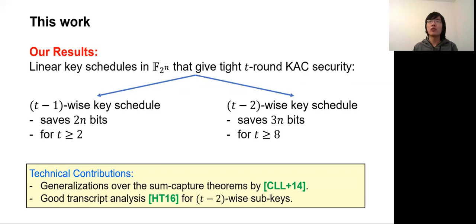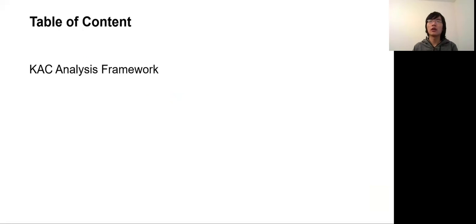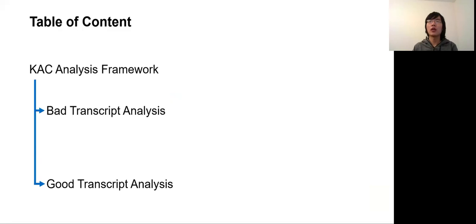To prove the results, we propose generalizations of the sum capture theorem by Chen et al. We also improve the subkey dependency in the good transcript analysis from T-wise to (T-2)-wise. In the rest of the talk, I will first describe the classical KAC analysis framework, which is based on transcript analysis. We partition all transcripts into either bad transcripts or good transcripts, primarily focusing on the bad transcript analysis.